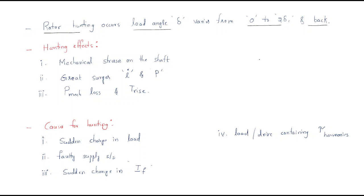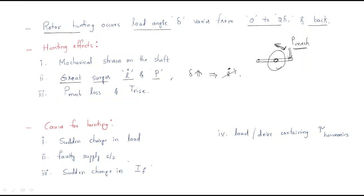The effects of hunting are as follows. First, mechanical stresses on the shaft: due to the load angle variation — increment and decrement — mechanical stress is applied on the shaft. Second, current and power surges: when the load angle varies, the current value also changes, and whenever the current changes the power also changes, causing surges.